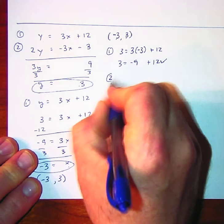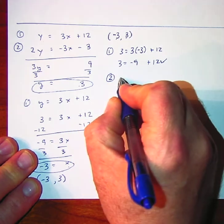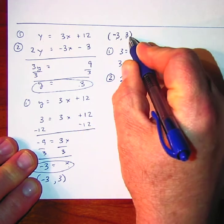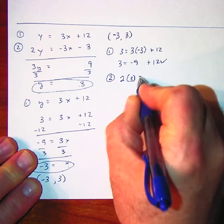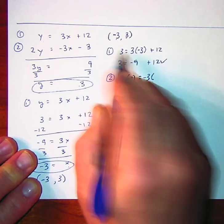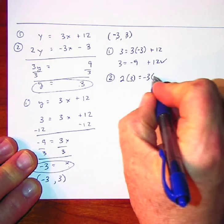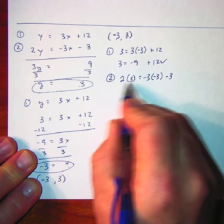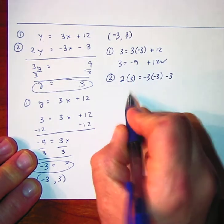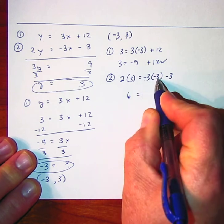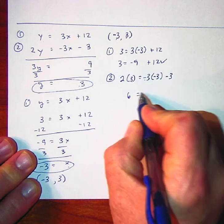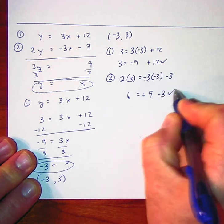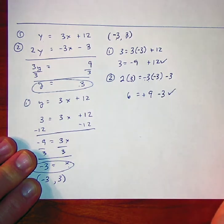We'll also check the second equation: 2 times our y value of 3 is equal to negative 3 times the x value of negative 3, minus 3. You have 6 is equal to — negative times a negative is a positive — 3 times 3 is 9, minus 3. And in fact, that's also a solution.